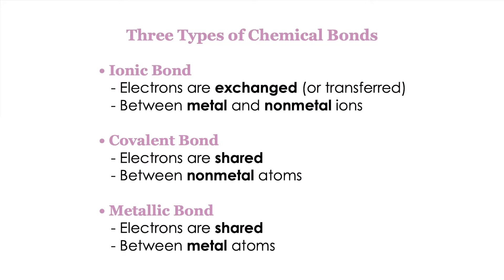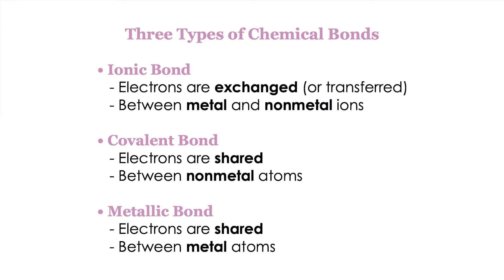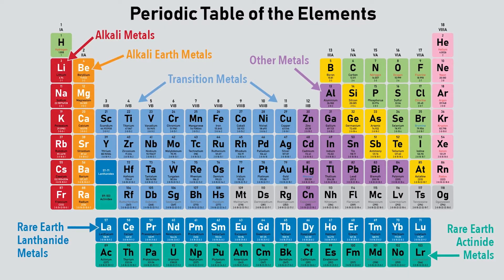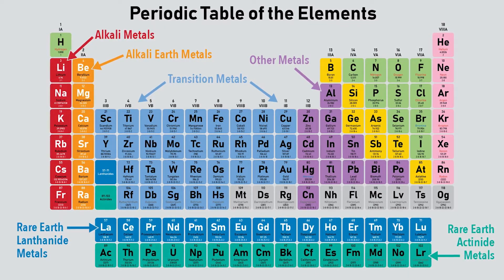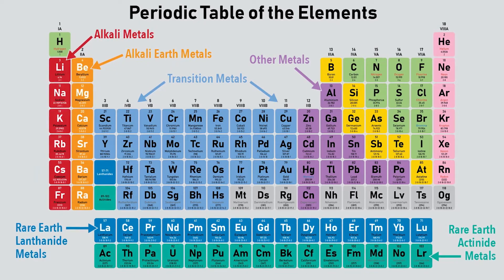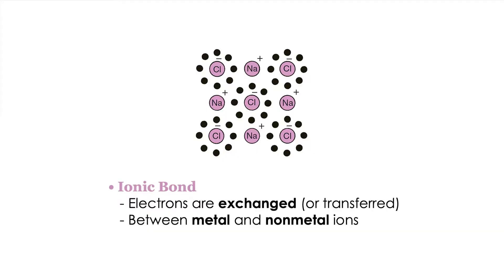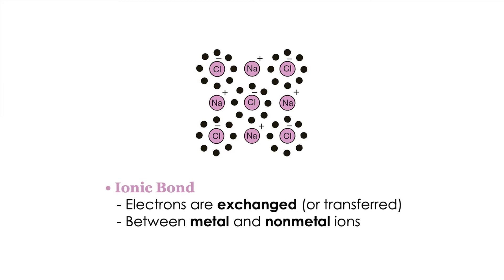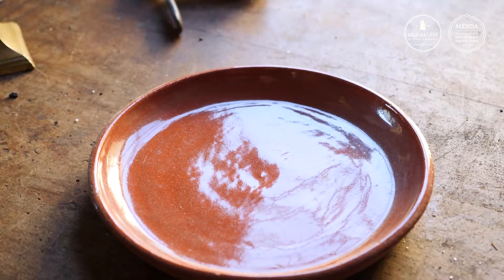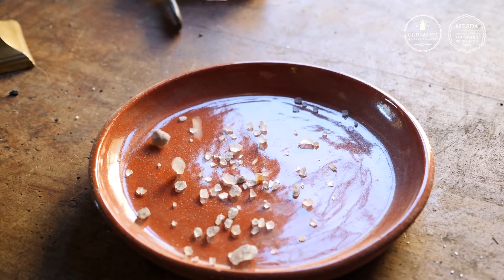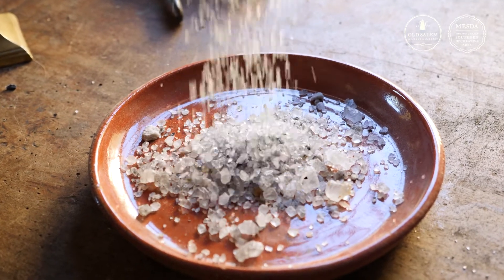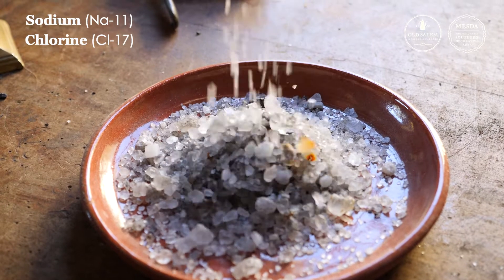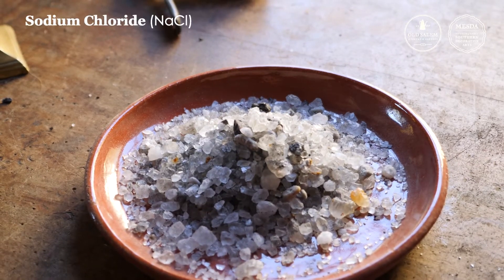Metallic bonds differ from ionic or covalent bonds. As you see on the periodic table, metals comprise nearly 80% of known elements. You might know ionic bonds as bonds that take place between elements of metal and a nonmetal in a one-to-one ratio. A common example of ionic bonds is between sodium and chlorine — this forms sodium chloride, or commonly table salt.